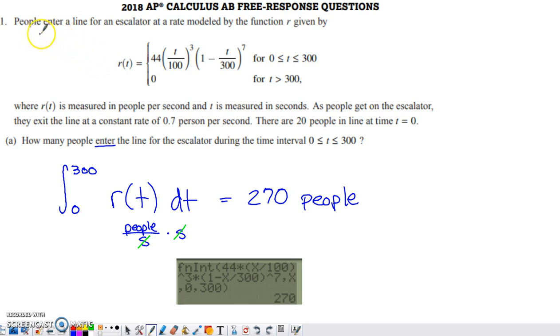People are entering a line for an escalator at a rate modeled by the function given by R. So R of T is defined as this crazy function and that holds from 0 to 300. And then no more people are going to be entering the line once T exceeds 300.